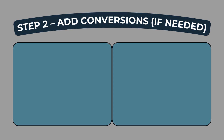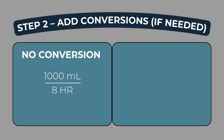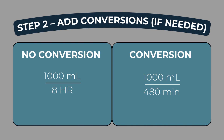Here's an important reminder: you won't always need to convert, but you always need to check. In this case, we're already in milliliters per hour, so no further conversion is needed. But if the time had been given in minutes — for example, if the order said infuse over 480 minutes — you'd need to convert minutes to hours before solving. This is where your conversion chart becomes your best friend.